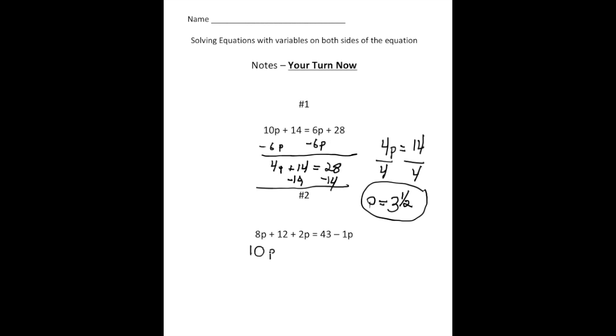So 10P plus 12 is going to equal 43 minus 1P. So now we have P's on both sides. So I'm going to either take away 10P or add 1P. I think it's easier just to add 1P to both sides. So now we get 11P plus 12 equals 43.